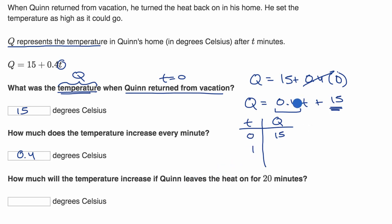At T equals one, what happens? Well, it's going to be 15 plus 0.4 times one. Well, that's just going to be 15.4. Notice, when we increased our time by one, our temperature increased by 0.4 degrees Celsius by the slope.